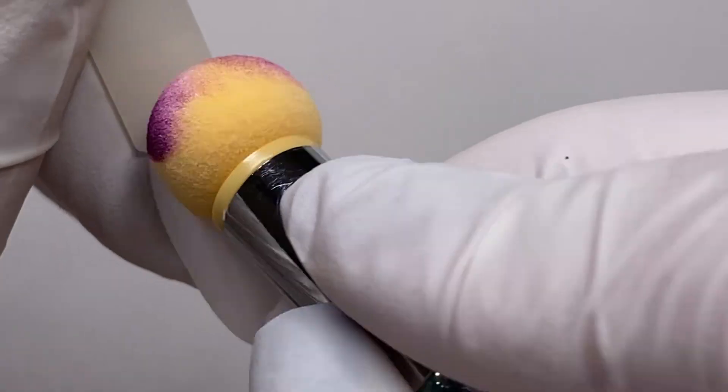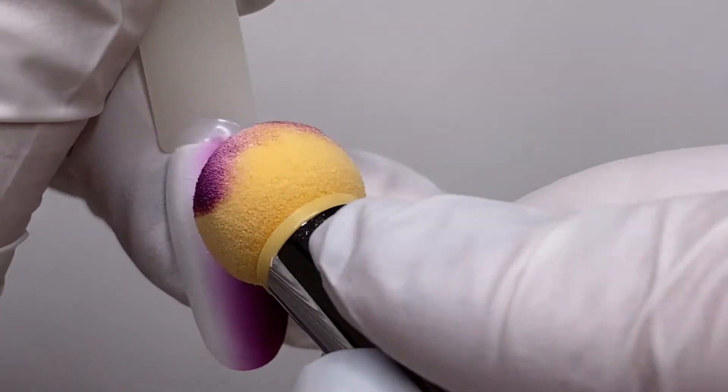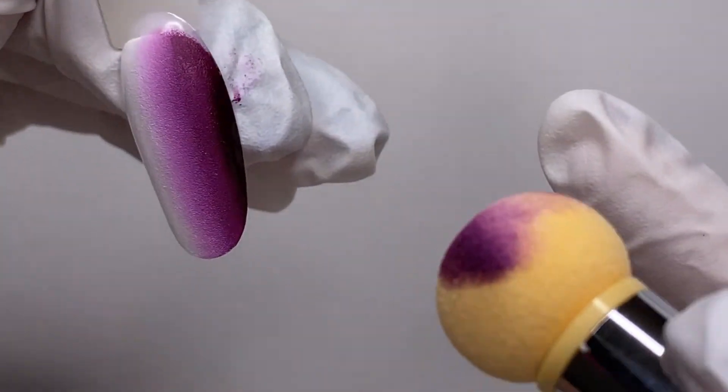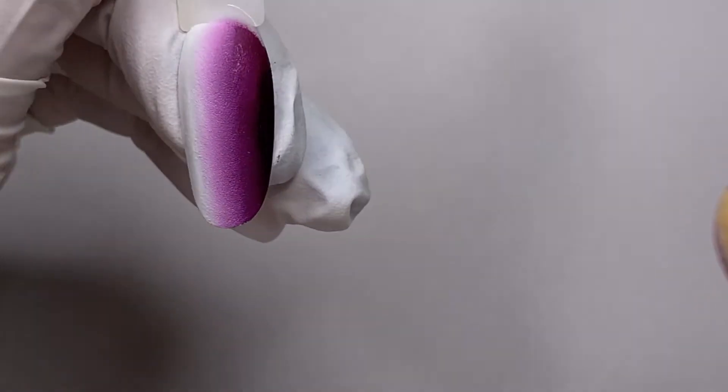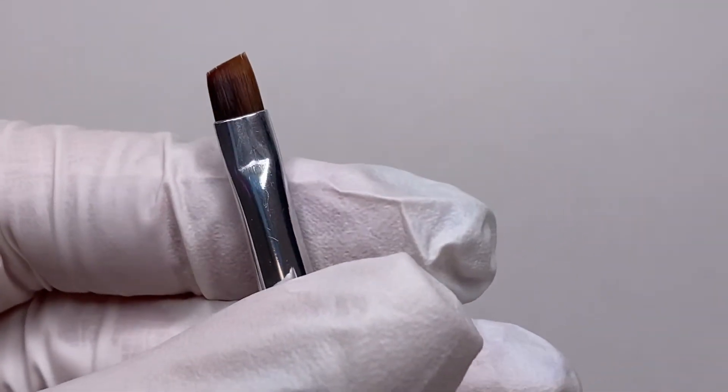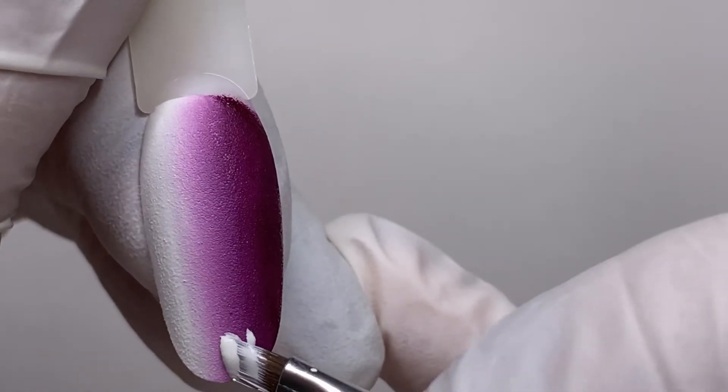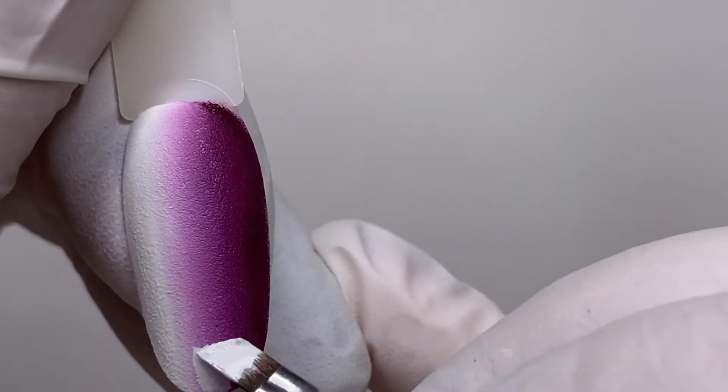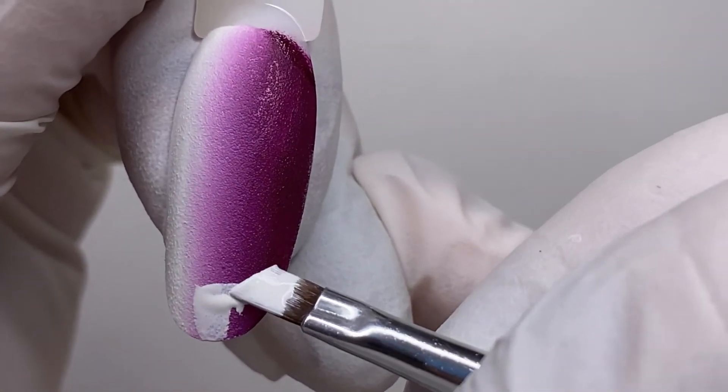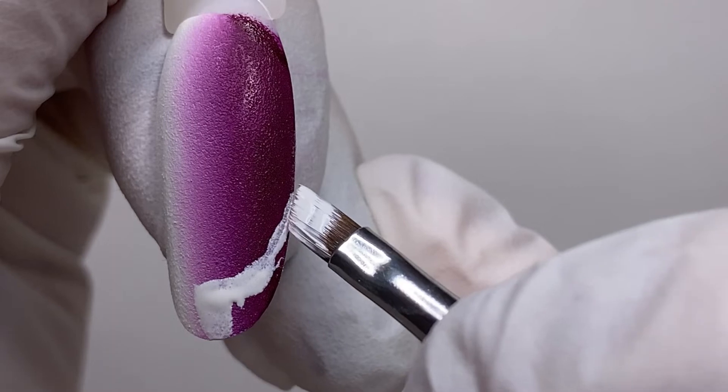At the same time I'm using a clean side of the sponge - so rotate the sponge and voila, nice clean ombre. To draw the French, all the time I'm using an angle brush the same we use for one stroke technique.